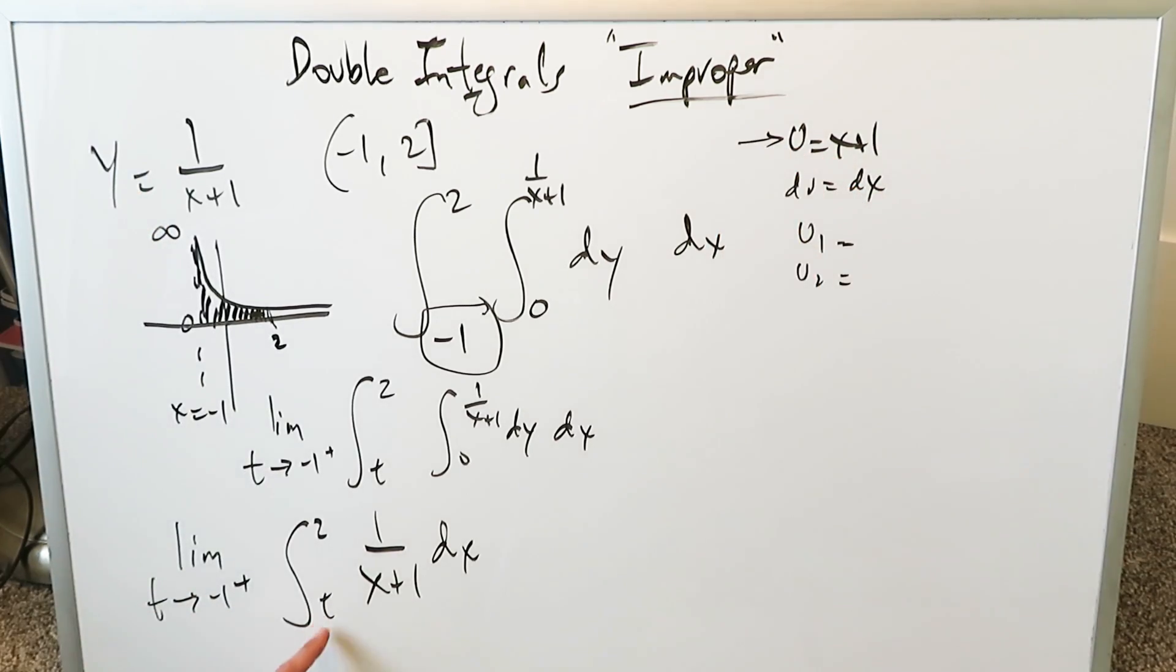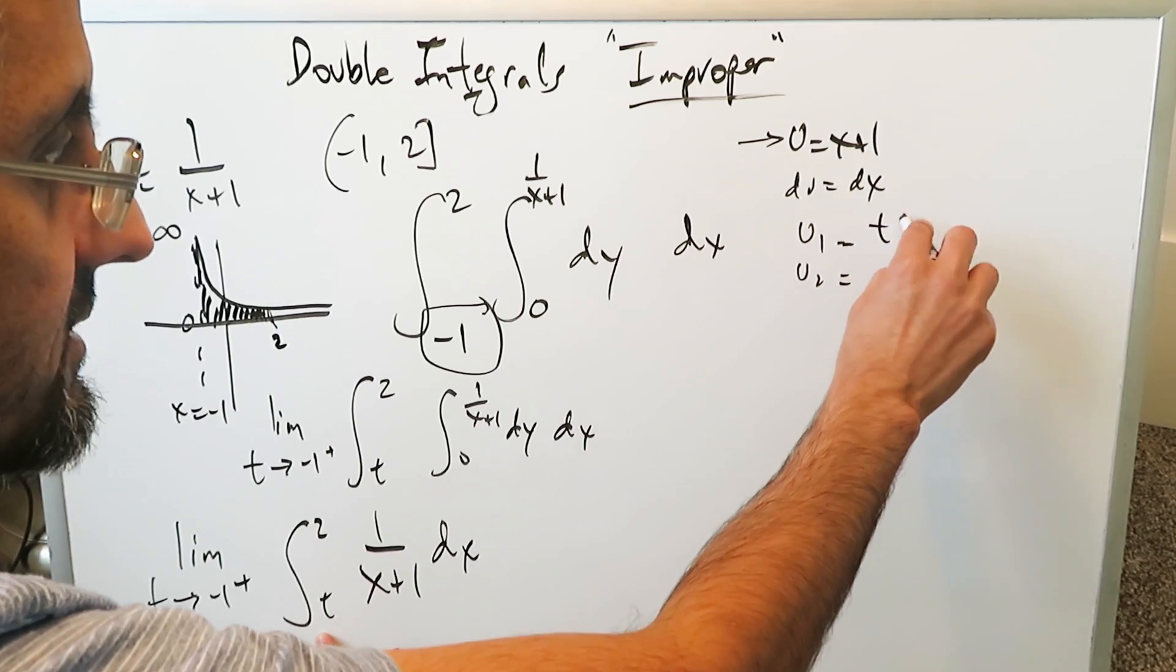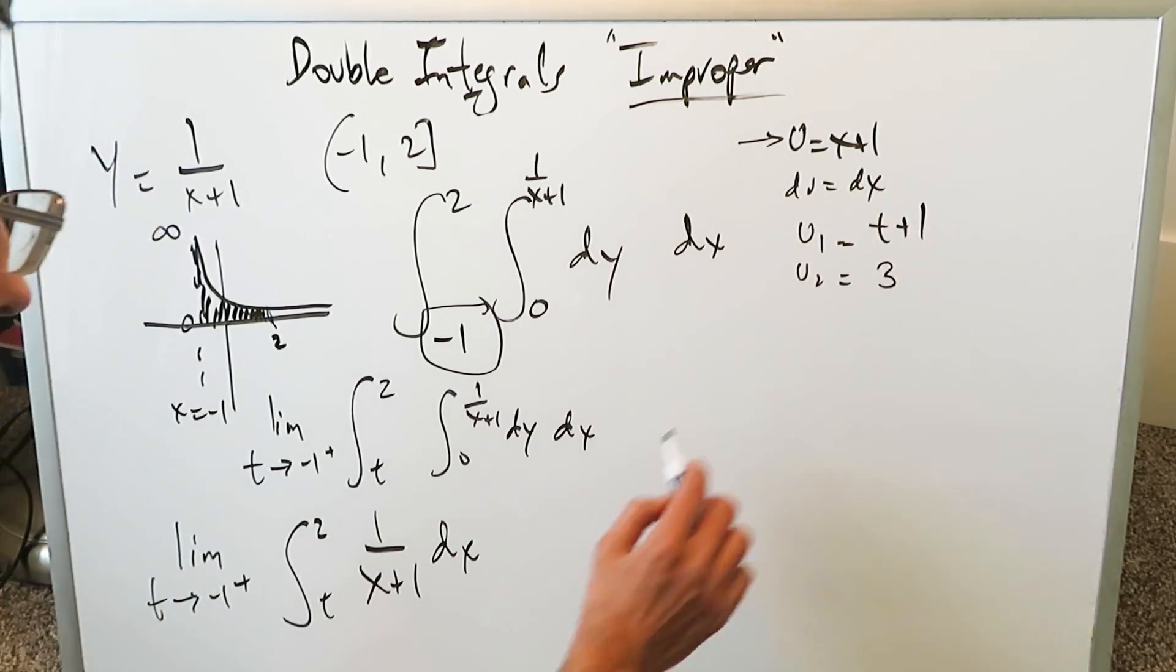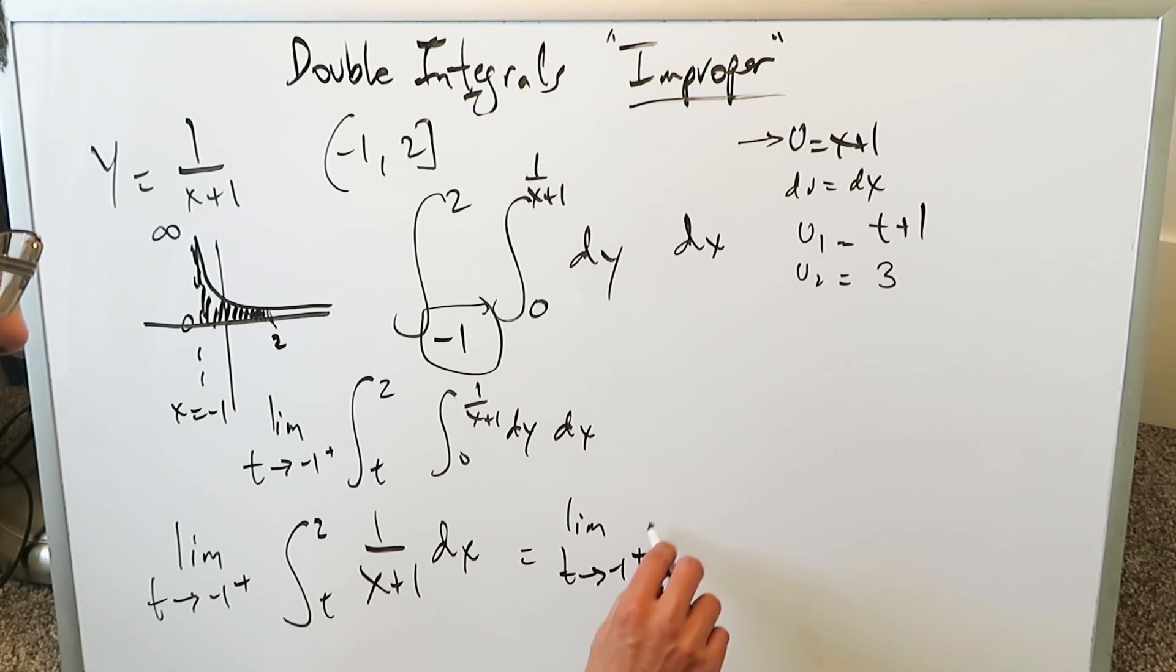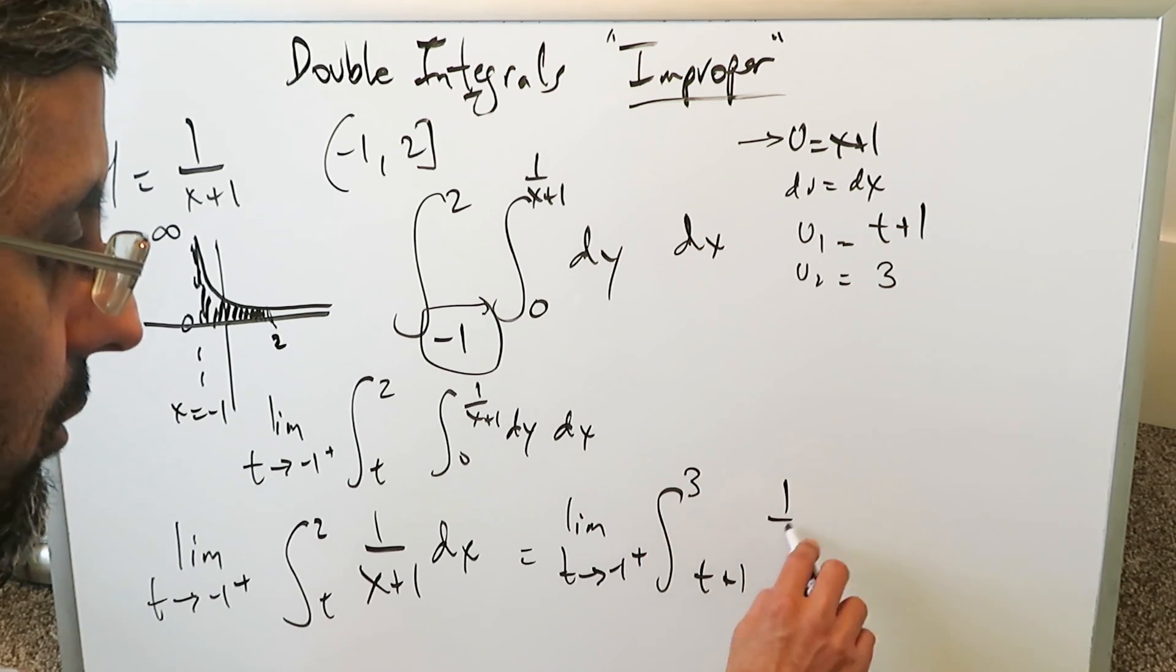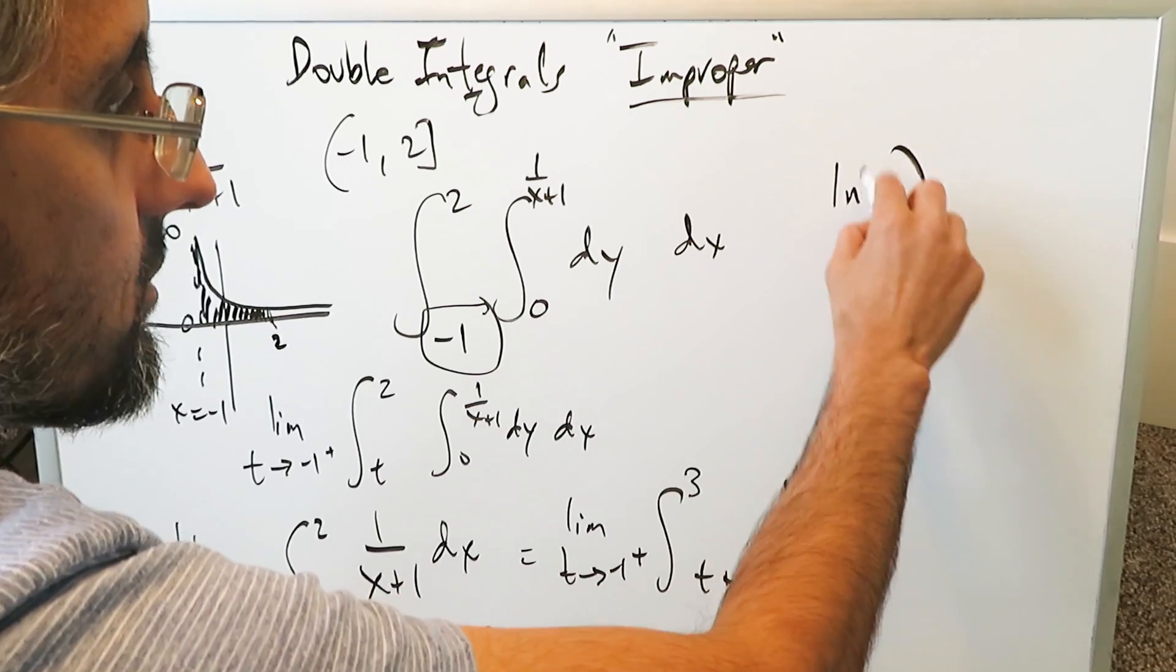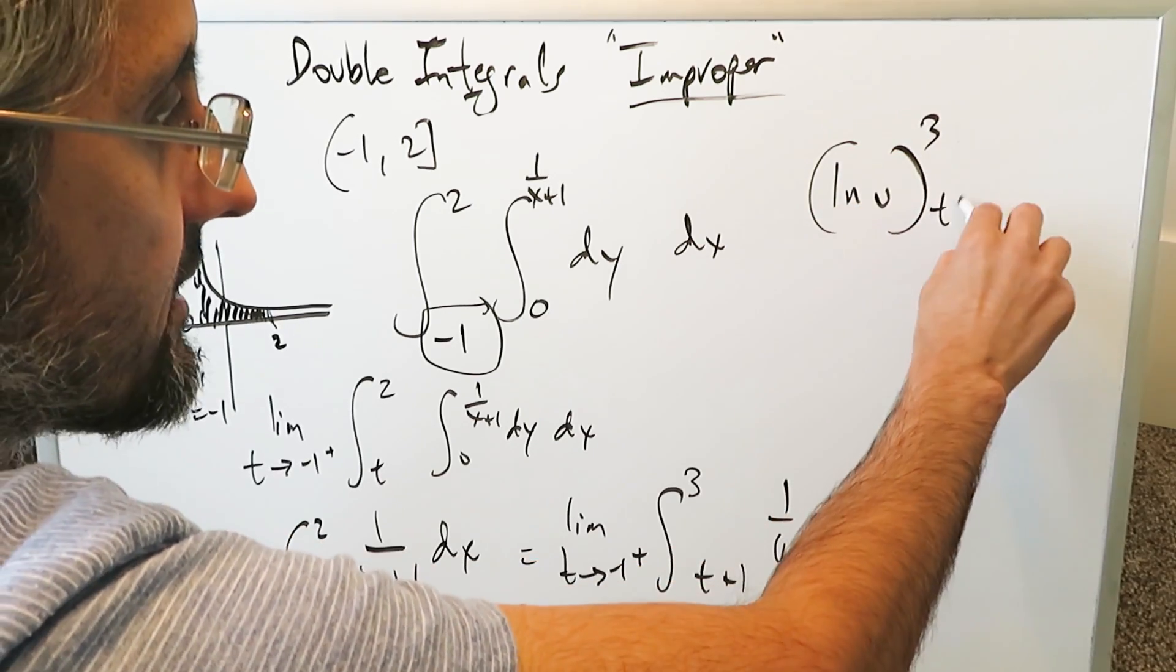Everything with regards to here, u1 will be t plus 1. You remember t here is originally minus 1. u2 is 2 plus 1 which is 3. Everything becomes limit as t approaches minus 1 from the right, t plus 1 to 3, 1 over u du. Antiderivative natural log u. We're looking at it from t plus 1 to 3.